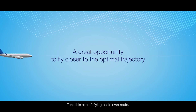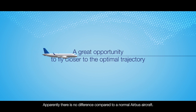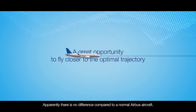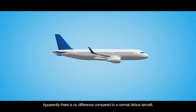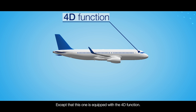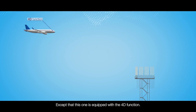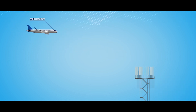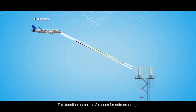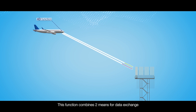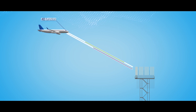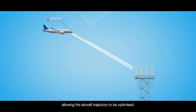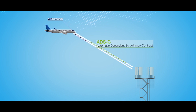Take this aircraft flying on its own route. Apparently there is no difference compared to a normal Airbus aircraft, except that this one is equipped with the 4D function. This function combines two means for data exchange between the aircraft and the ground, allowing the aircraft trajectory to be optimized.